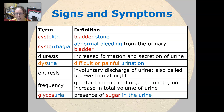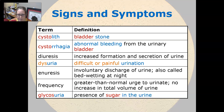Diuresis is an increased formation and secretion of urine. Dysuria is difficult or painful urination. Enuresis is an involuntary discharge of urine, also called bedwetting at night.